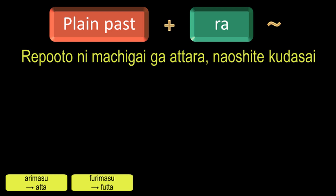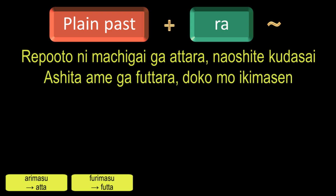And to say 'if it rains tomorrow, I will not go anywhere,' in Japanese it will be: Ashita Ame ga Futtara doko mo ikimasen. Here, Ashita means tomorrow, Ame means rain, and doko is the interrogative which means where.